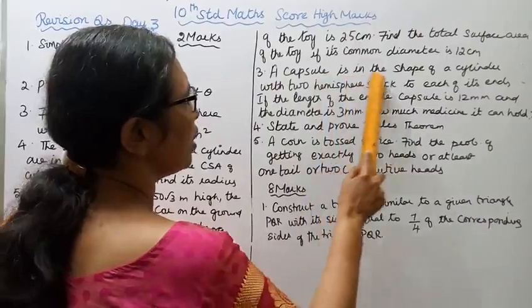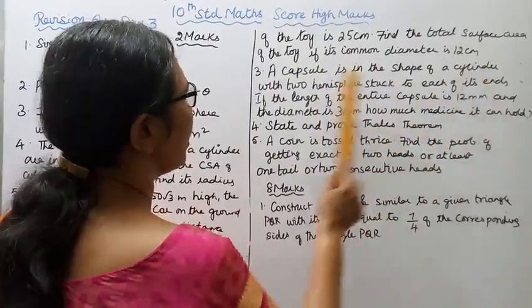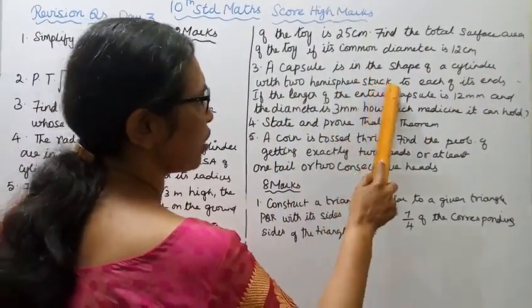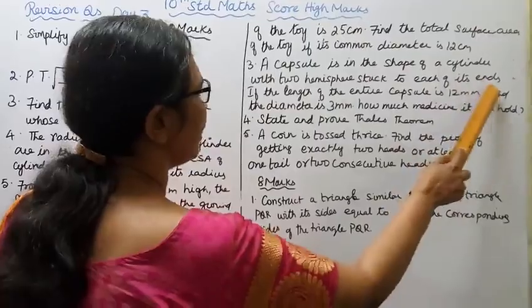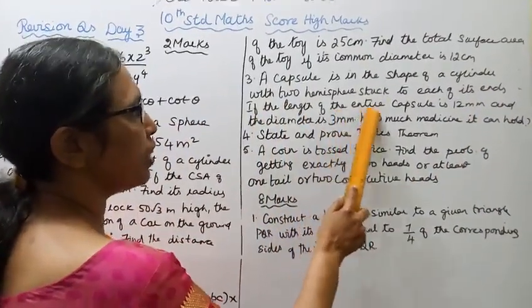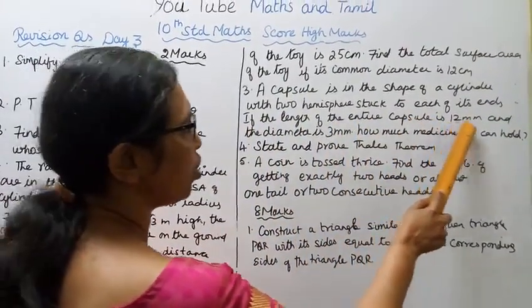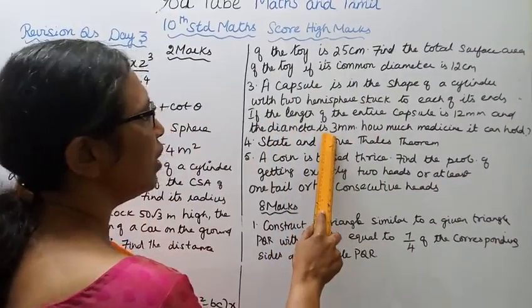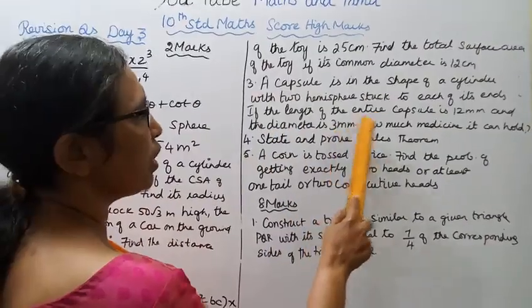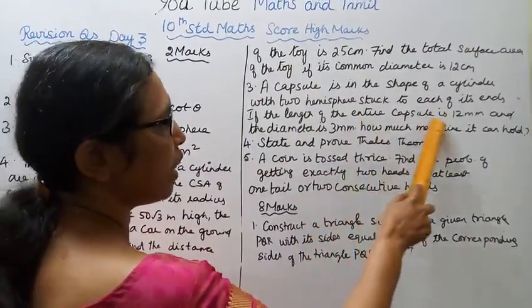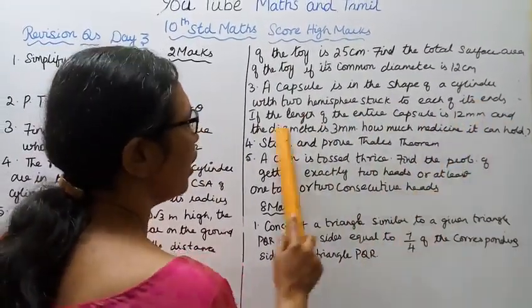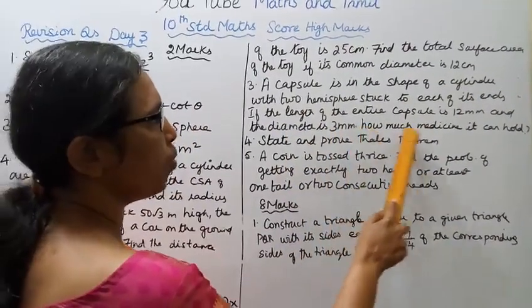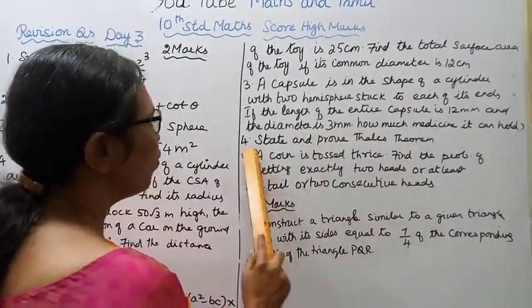Third, a capsule is in the shape of a cylinder with two hemispheres stuck to each of its ends. If the length of the entire capsule is 12 millimeters and the diameter is 3 millimeters, how much medicine can it hold?